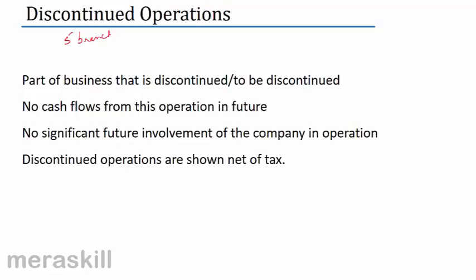Each of these branches maybe have two units. Now, let us say one of these units is going to be discontinued. If this happens, then whatever income we get from this discontinued operation during the year has to be separately disclosed.